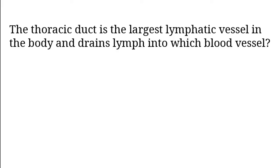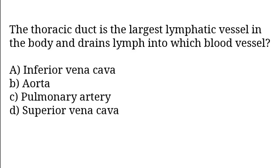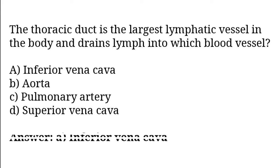The thoracic duct is the largest lymphatic vessel in the body and drains lymph into which blood vessel? A) Inferior Vena Cava, B) Aorta, C) Pulmonary Artery, D) Superior Vena Cava. The correct answer is option A — Inferior Vena Cava.